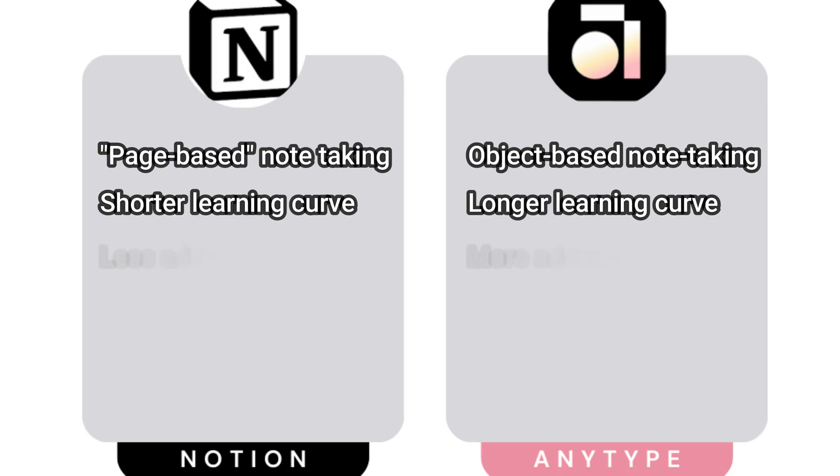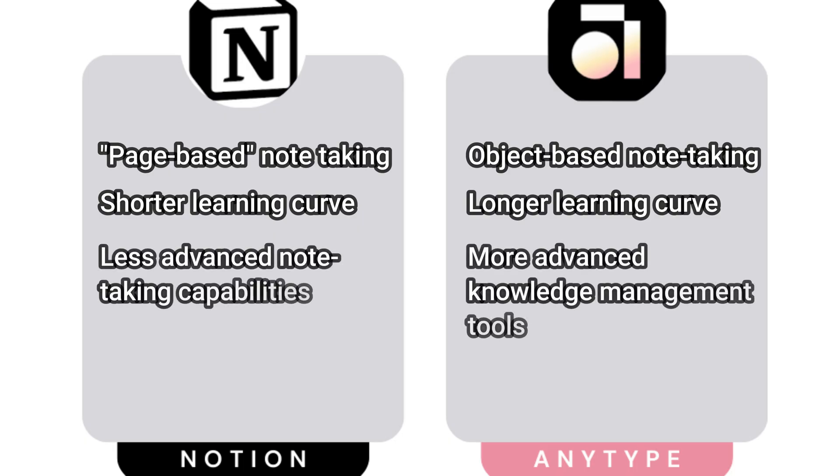The next difference is about your goals. If you are looking for a tool that allows you to create a complex knowledge base where you can connect all your data and visualize it, AnyType is the better alternative. Unfortunately, Notion doesn't have these advanced note-taking capabilities.